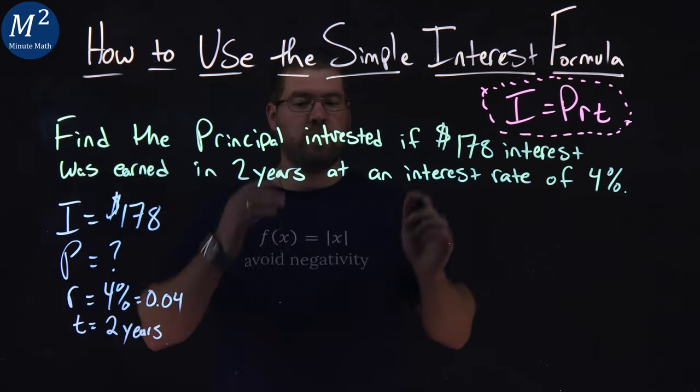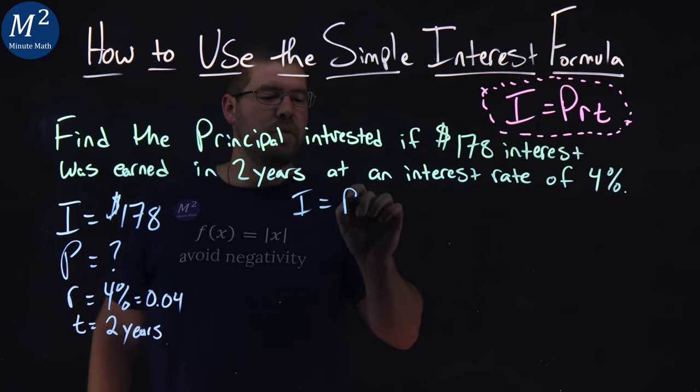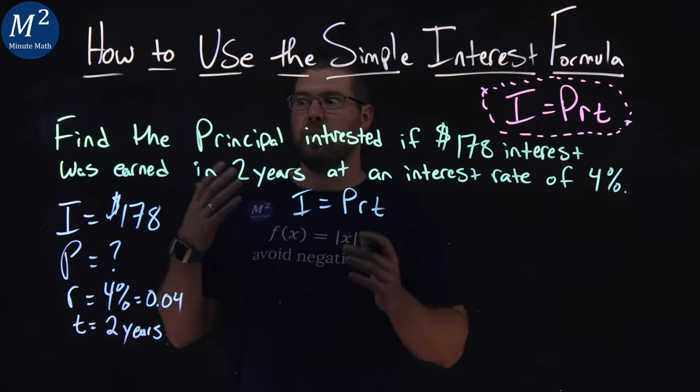So what we're going to do is use our formula, I equals PRT, and we're going to plug in what we know.